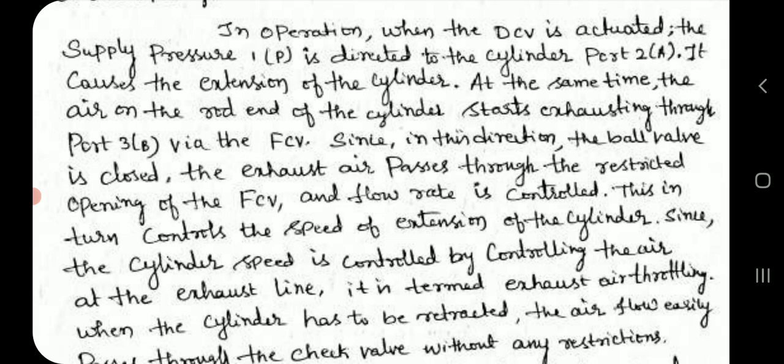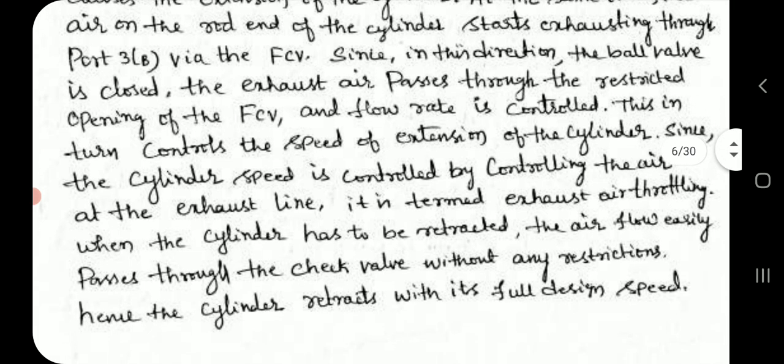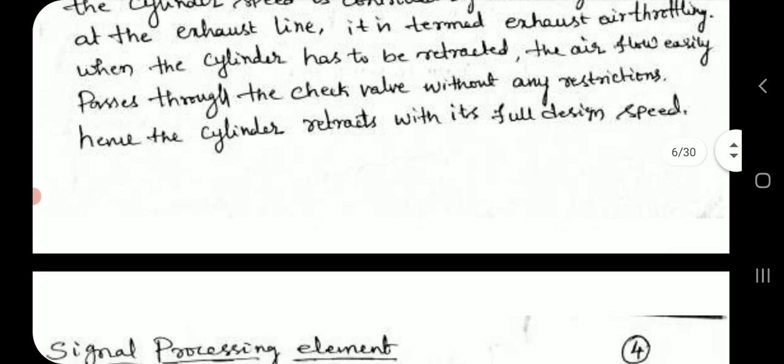Since the cylinder speed is controlled by controlling the air at the exhaust line, it is termed exhaust air throttling. When the cylinder has to be retracted, the airflow easily passes through the check valve without any restrictions, hence the cylinder retracts with its full design speed.